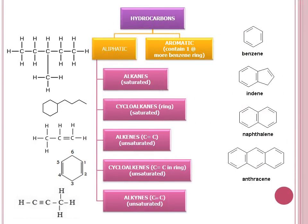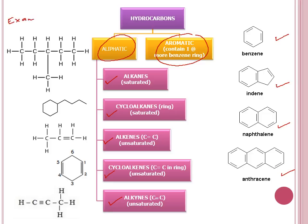For hydrocarbons, we have several categories: alkanes, cycloalkanes, alkenes, cycloalkenes, and alkynes. For aliphatic, meaning it's not a ring. If it has a benzene ring, we call it aromatic. The examples of aromatic hydrocarbons are benzene, indene, naphthalene, and anthracene. Let's look at examples for aliphatic hydrocarbons by revising the IUPAC naming.